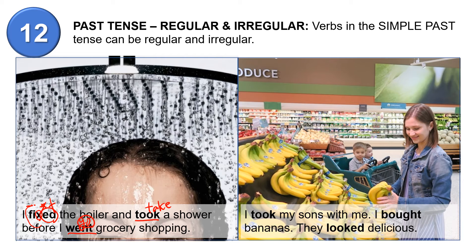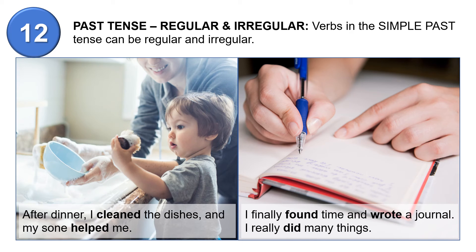'I took my sons with me. I bought bananas.' 'Buy' — B-U-Y — is irregular. 'They looked delicious' — 'look' is regular, so you put 'ed'; it sounds like T. 'The bananas looked delicious.' After dinner, I cleaned the dishes and my son helped me. These are good examples of regular verbs: 'cleaned' — N is voiced so 'ed' sounds like D; 'helped' — P is voiceless so 'ed' sounds like T.